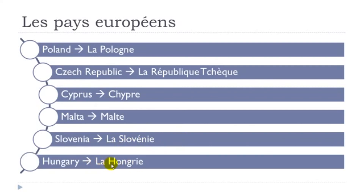La Hongrie. Remember H doesn't exist in French so you don't pronounce it — it starts with 'On'. Then Gris, and the final E is not pronounced. La Hongrie.